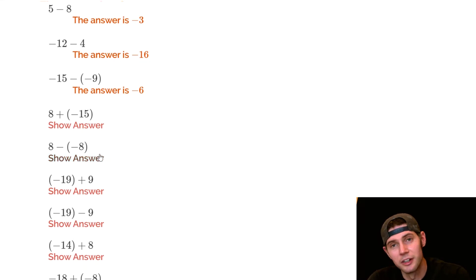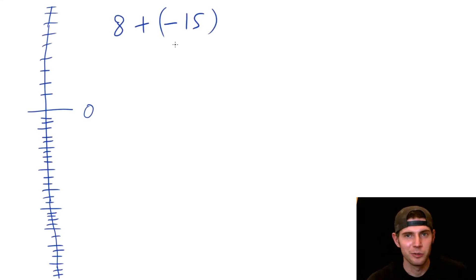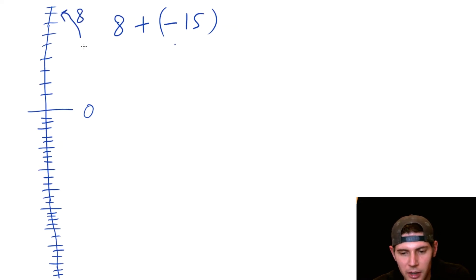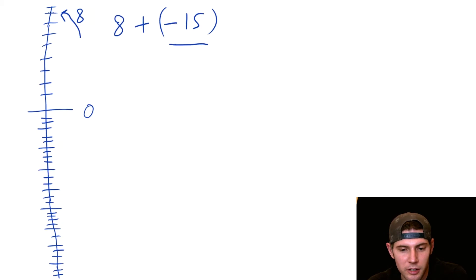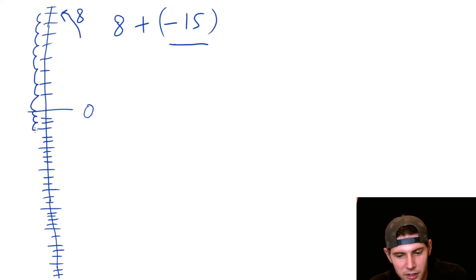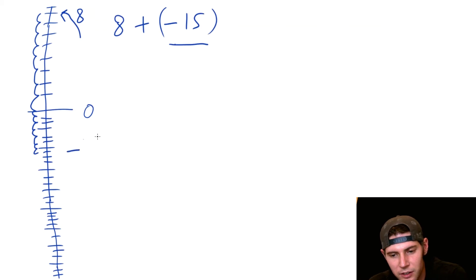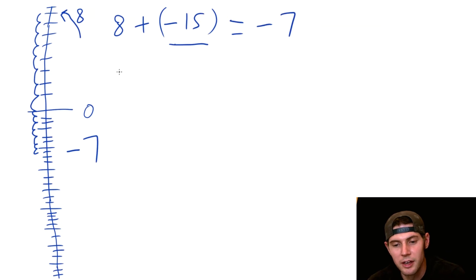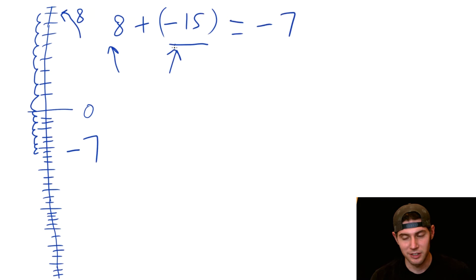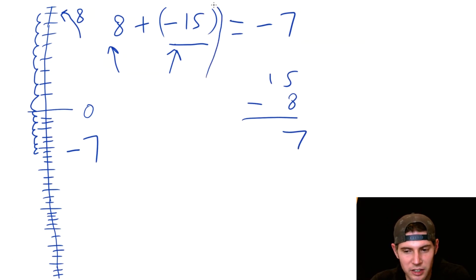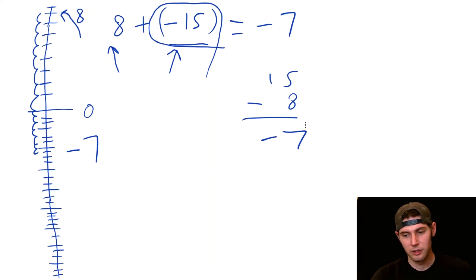Next: eight plus negative fifteen. We start at positive eight and then plus a negative means going down, same as minus. We go down fifteen — eight steps bring us back to zero, then seven more steps down. Counting gives us negative seven. The alternative: fifteen minus eight is seven, and since the negative number is larger it pulls the answer to negative seven.